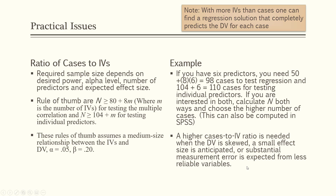The ratio of cases to independent variables is important because with more independent variables than cases, you can find a regression solution that completely predicts your dependent variable — which is suspect and not what we're really finding in the real world. There's a required sample size that depends on your desired power, the alpha level, the number of predictors, and the expected effect size. All of this goes back into designing your study, so you determine what sample size you need up front.